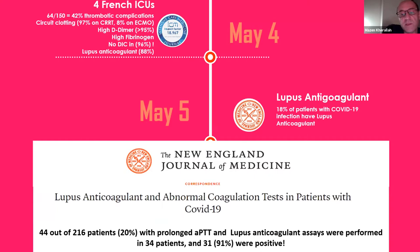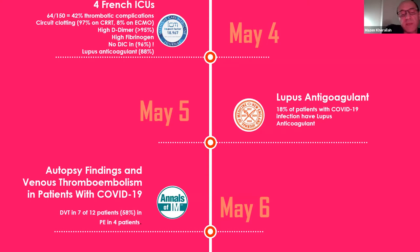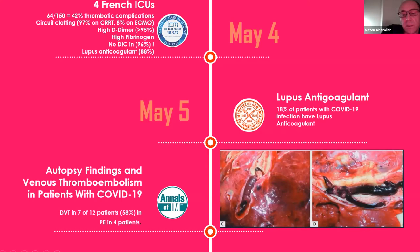On May 5th, another study in the New England Journal of Medicine described lupus anticoagulant in 18% of patients with COVID-19. On May 6th, autopsy findings of venous thromboembolism in patients with COVID-19 showed DVT in 7 out of 12 patients — a rate of 58% — and 4 patients had pulmonary embolism. This was published in the Annals of Internal Medicine.